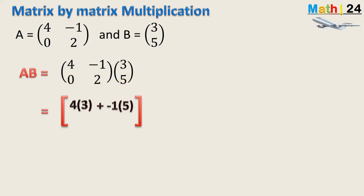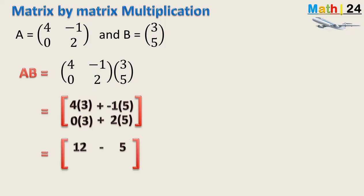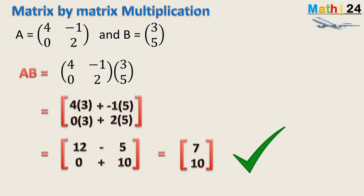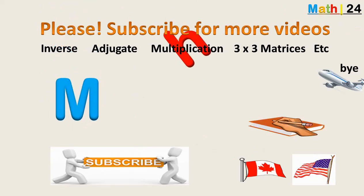Moving to the second row: 0×3 + 2×5. Simplifying: 12 minus 5 gives 7, and 0 plus 10 gives 10. So the final answer for AB is the matrix: 7, 10. If anything was unclear, you can play and watch again.